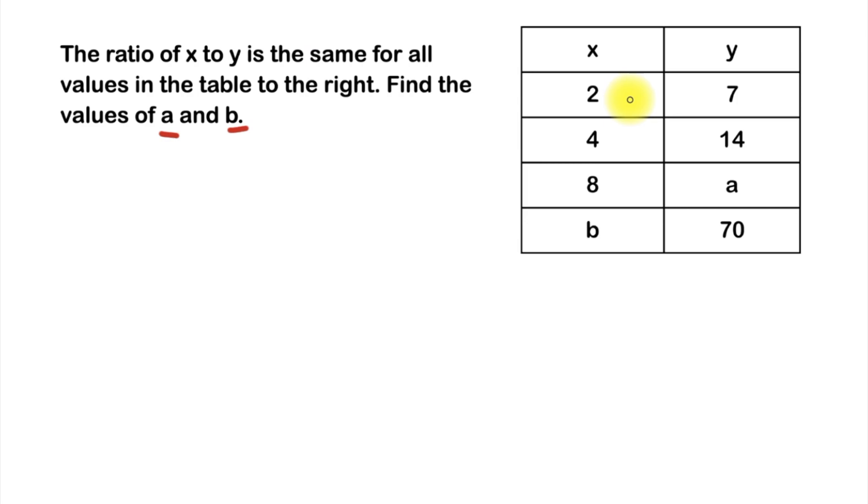Because it's a ratio table we can read it as for every 2 we have 7, and in this row we could read it as for every 4 we have 14. We have the variable a here and the variable b here and we're going to have to find what the values of those variables are.